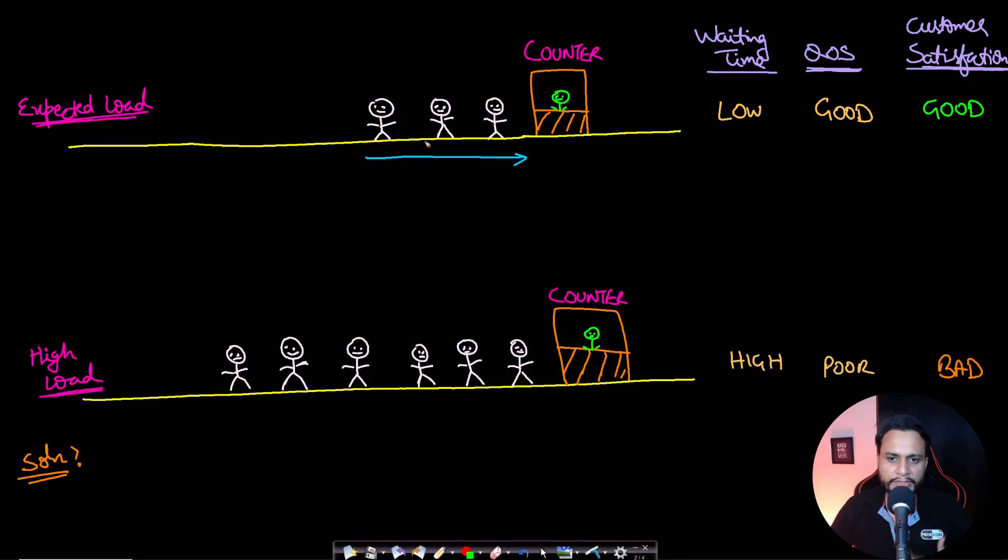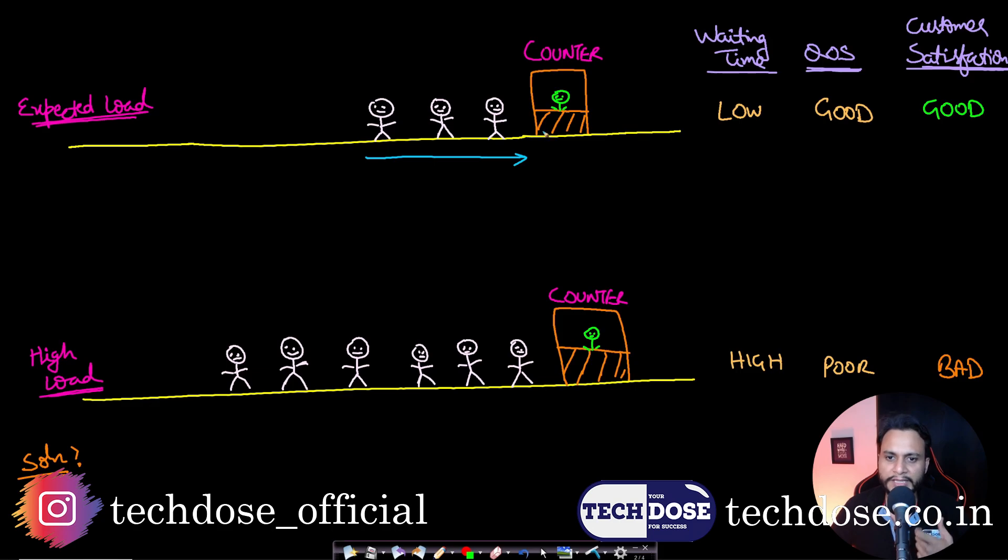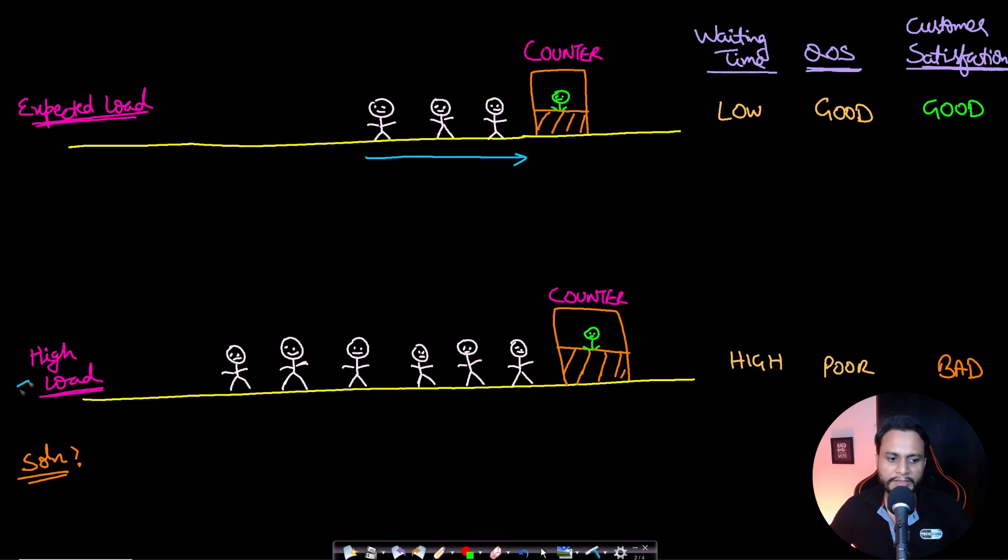The more the number of people standing in a queue, if you have a single counter then the time taken to process each request will increase. The waiting time for each person will increase. Now let's say that at some point of time there is a high influx of people, so the line length will increase and the waiting time for people will increase if you have a single counter.